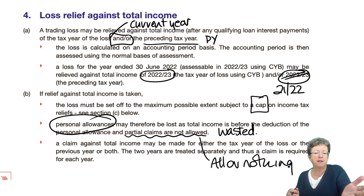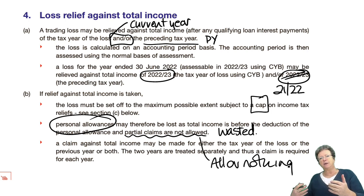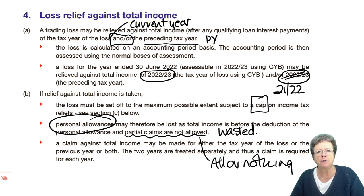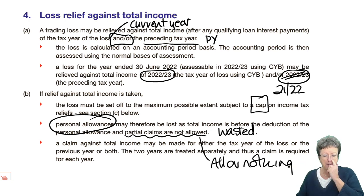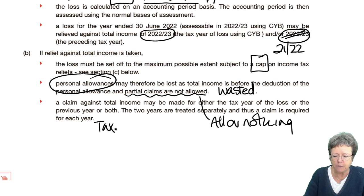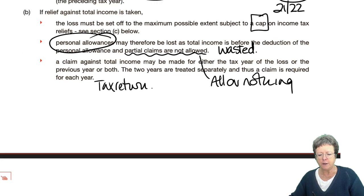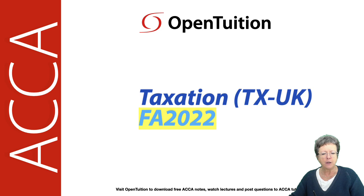Thankfully, in the TX exam, the question will normally tell you very specifically what they want you to do — or it will be very obvious from the question. You will never have to do a full analysis of: if we do this we'll make that saving, if we do that we'll make this saving — because that's more of an advanced tax level. It should be obvious in the question, or you're given specific instructions. You need to make a claim if you are claiming loss relief, and it's normally done on your tax return. So let's look at example number two.